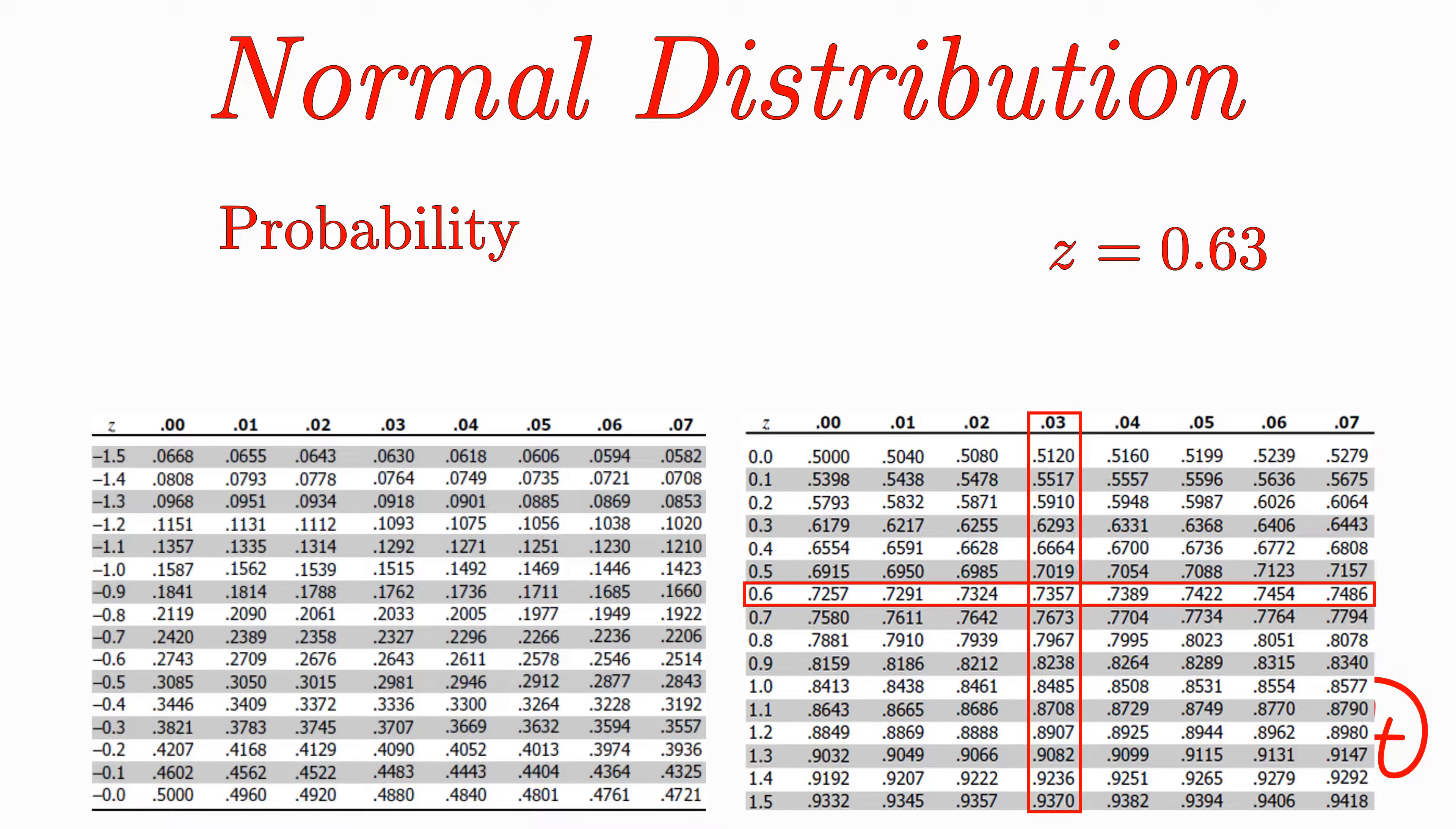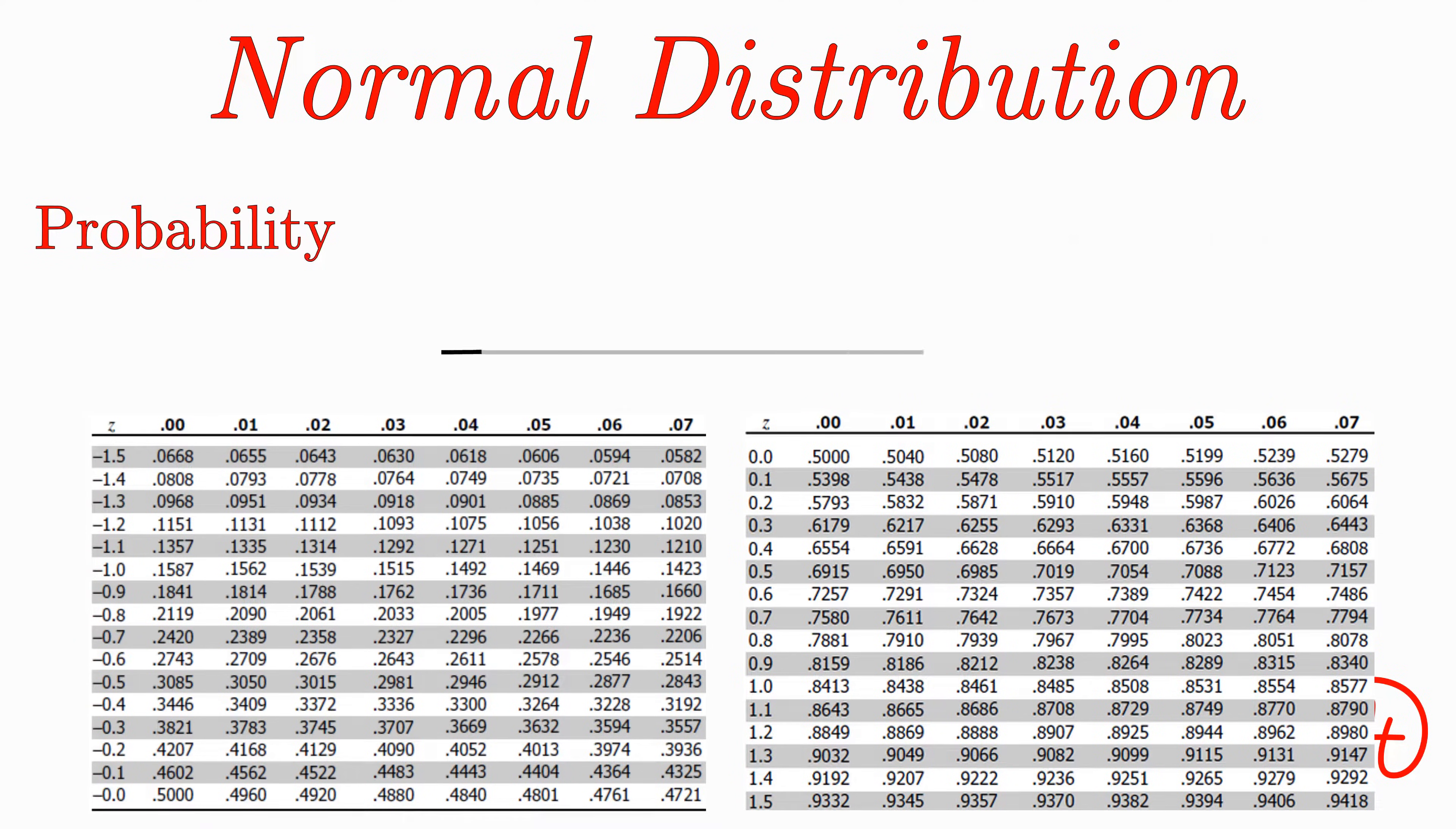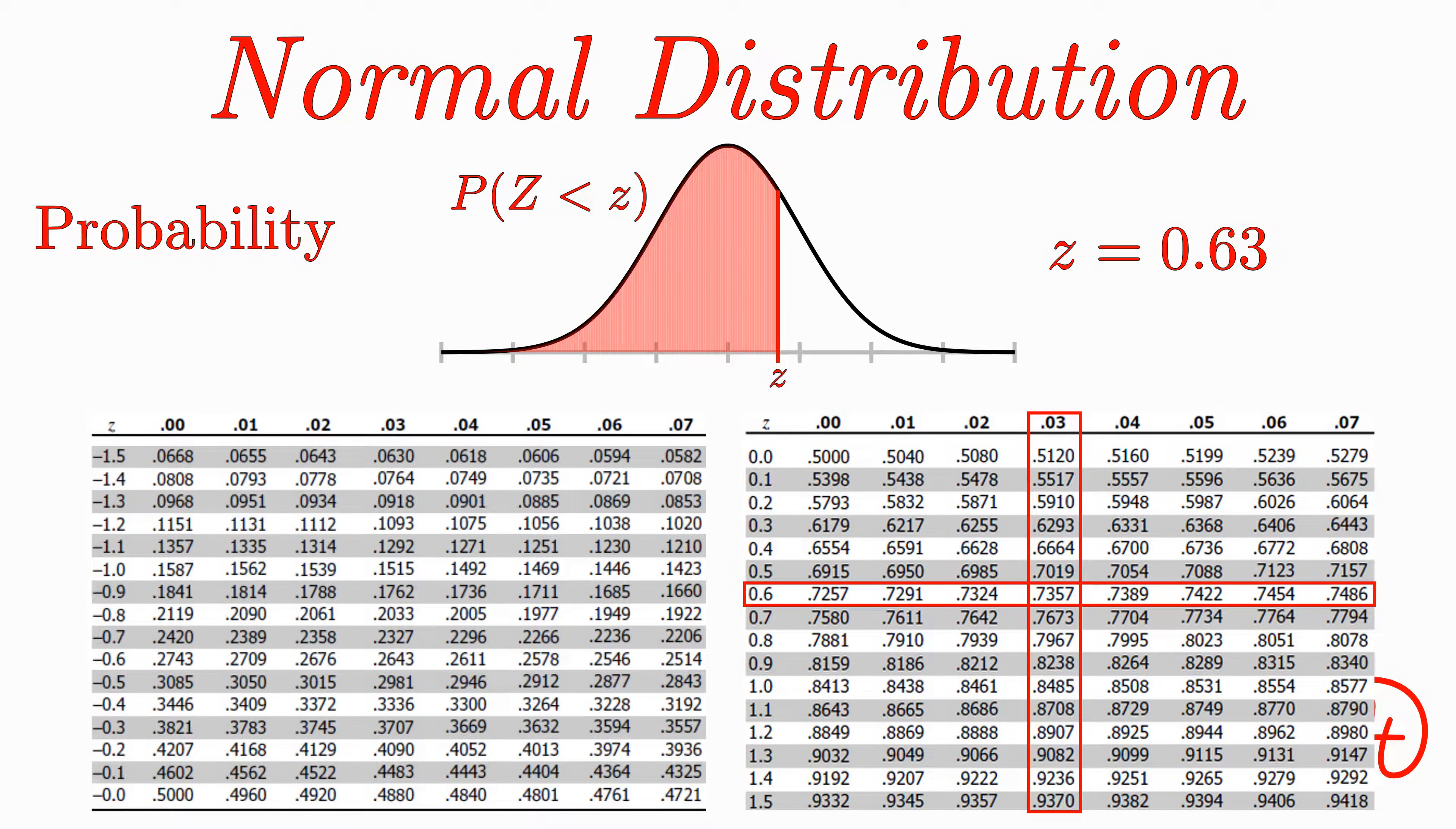Okay, but what does that value actually mean? Well in order to know that, it's very important to understand what values the z-chart you're looking at gives you. For these z-charts, it happens to give you the area or probability of being to the left of your z-score. So for our previous example, based on the value found in the chart, there's a 73.57% chance of having a z-score less than 0.63.